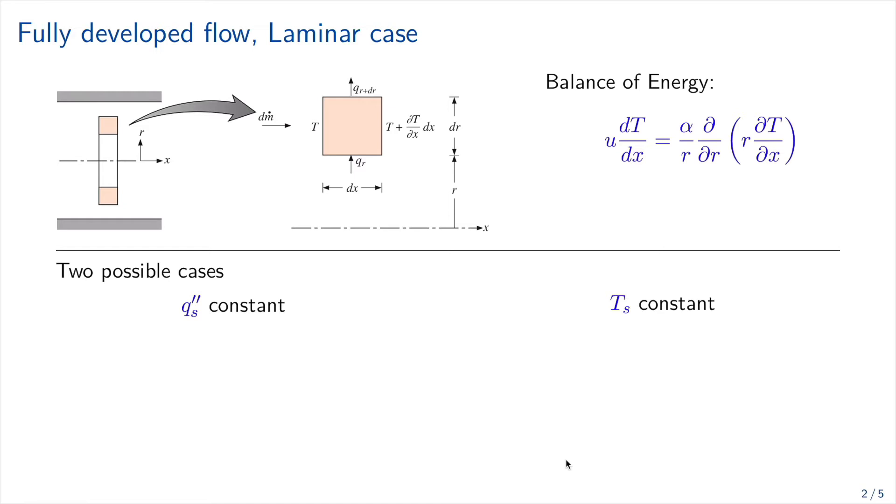I'm not going to go over that but I'm going to present the correlation for two different situations. When we have heat transfer flux constant, in that case the Nusselt is going to be equal to hd divided by k is equal to 4.36. And if we have temperature constant on the surface, Nusselt d which is hd over k is equal to 3.66. So we have two very straightforward relationships for Nusselt number in the case of laminar flow.